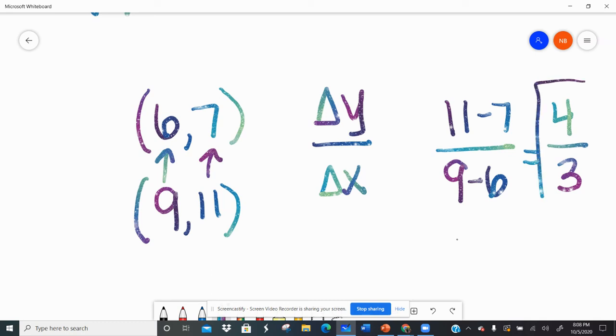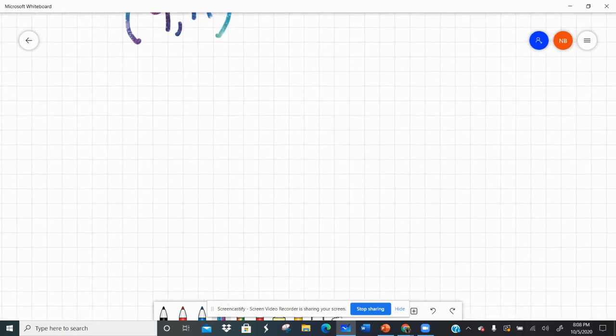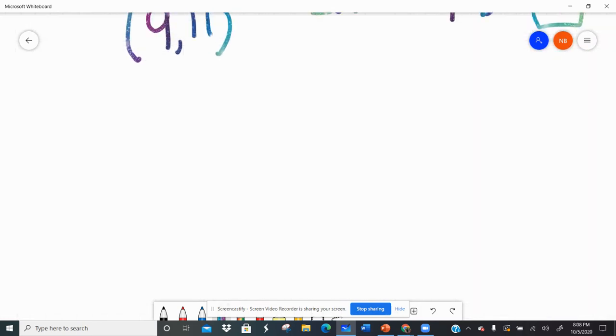And I can leave that as an improper fraction. Matter of fact, it's better if you leave it as an improper fraction. So the slope of this line would be four-thirds: up four, over three.